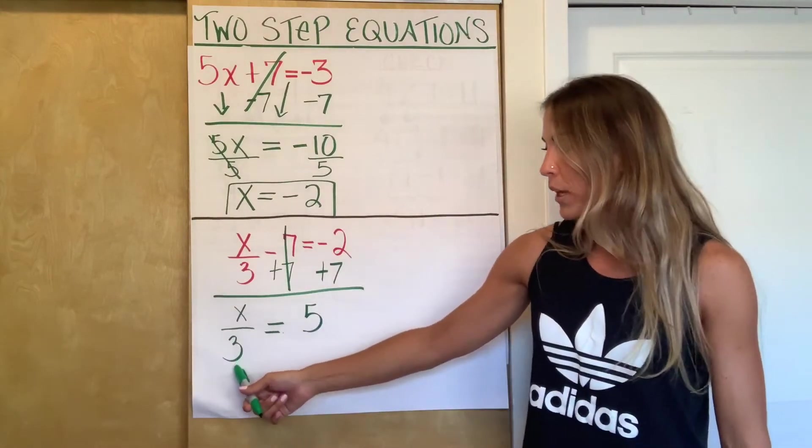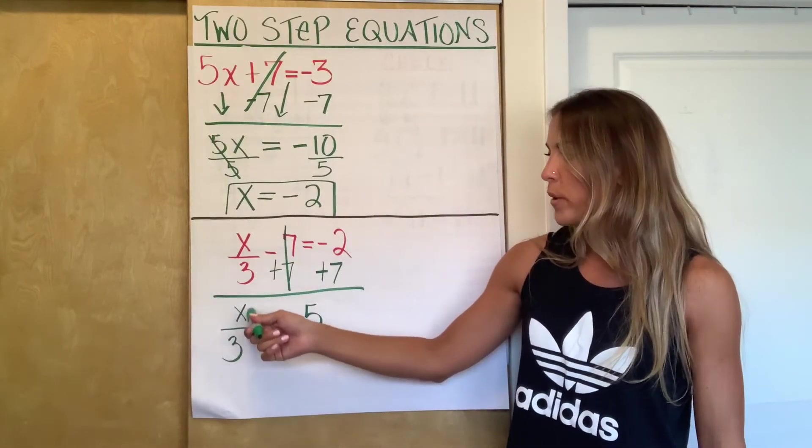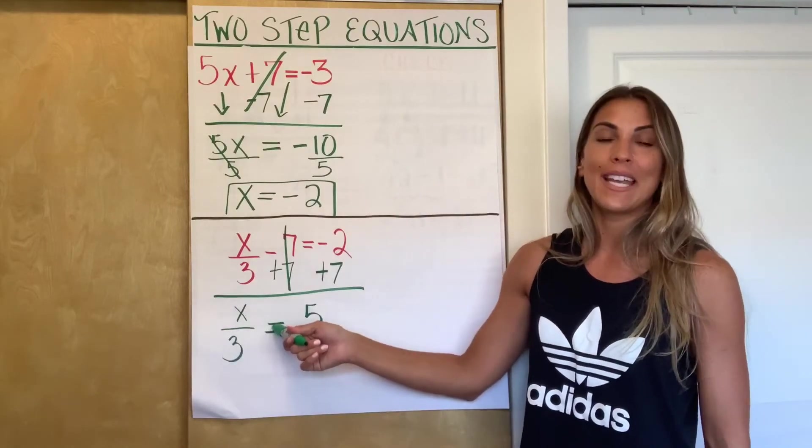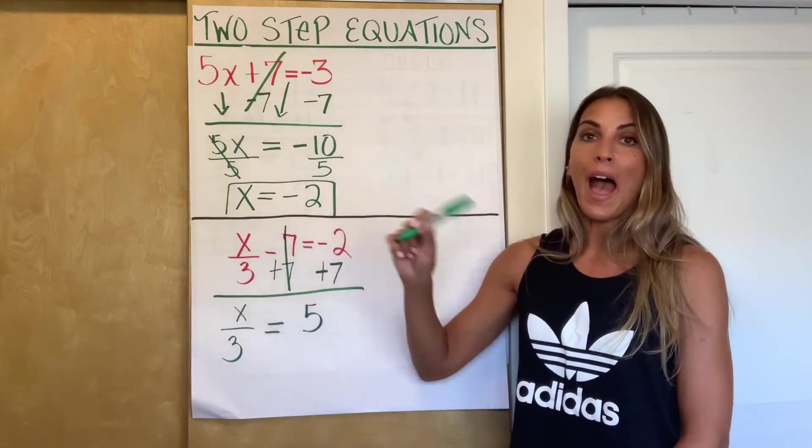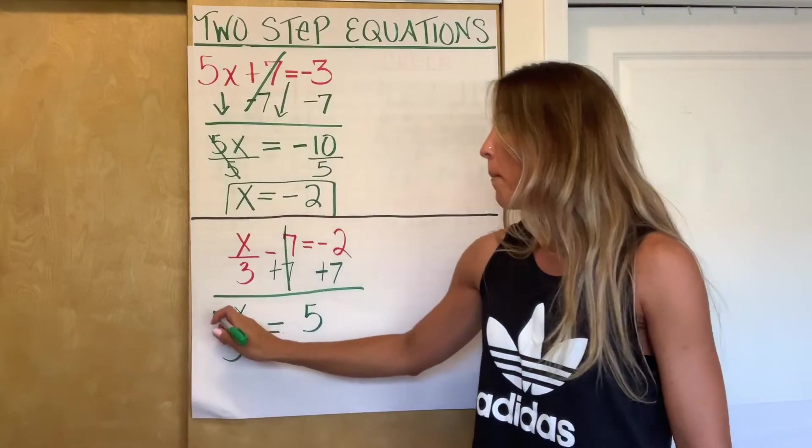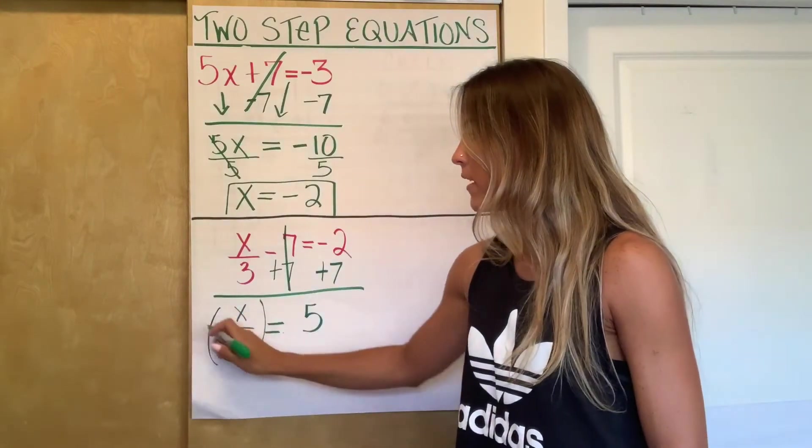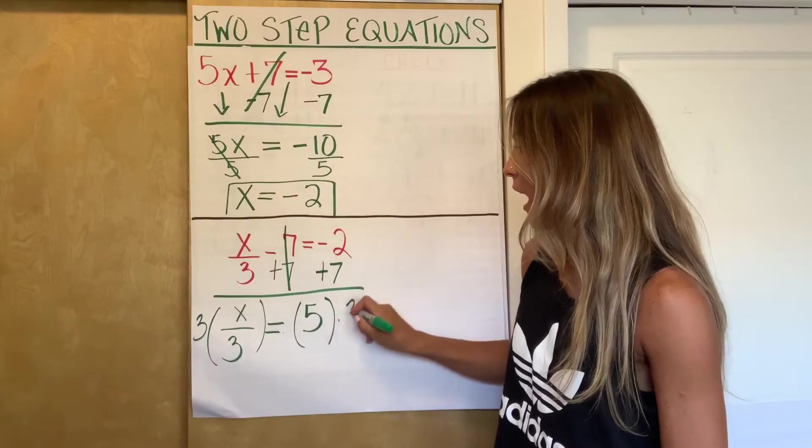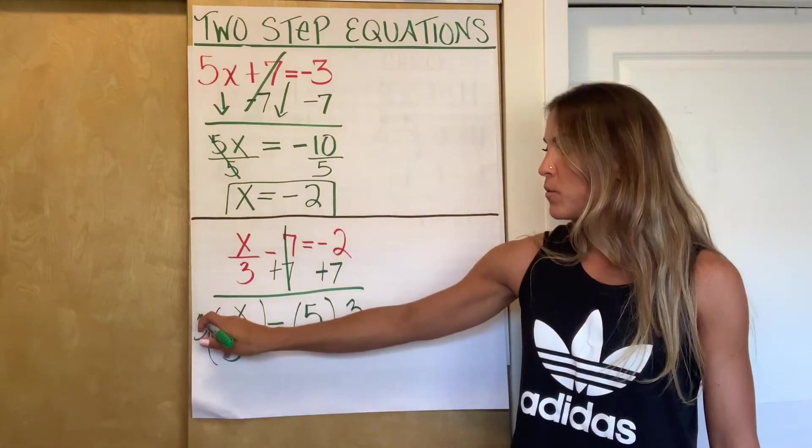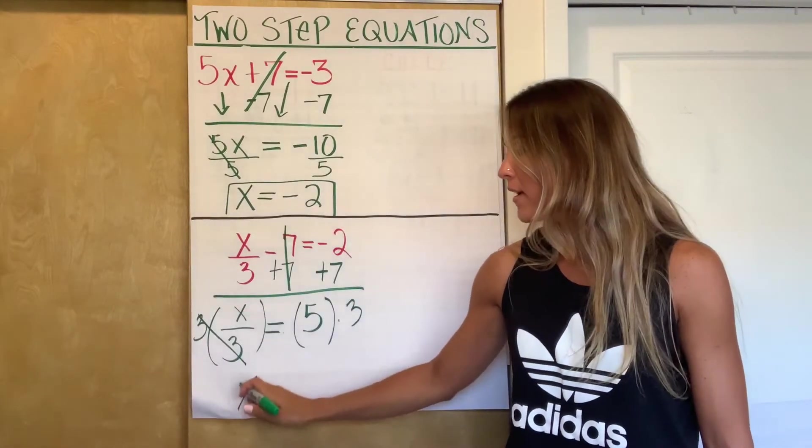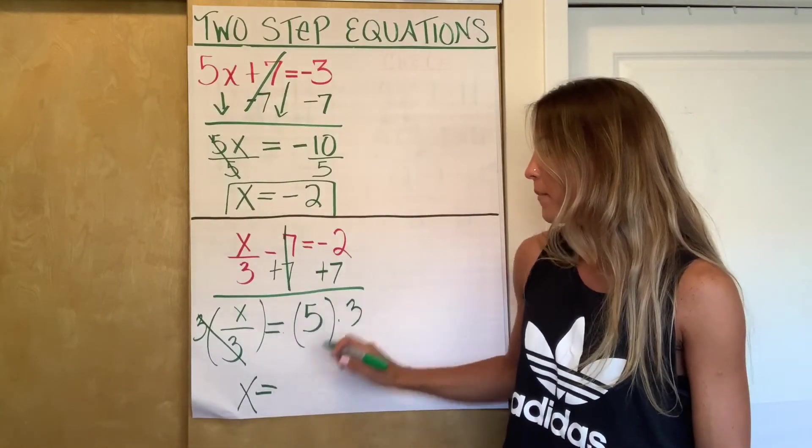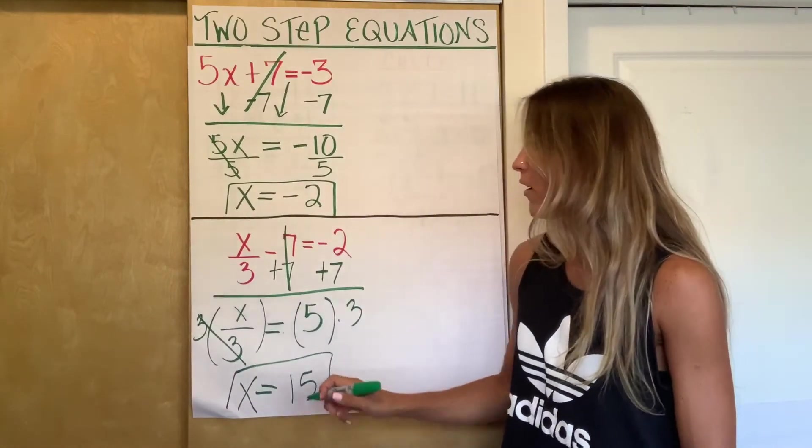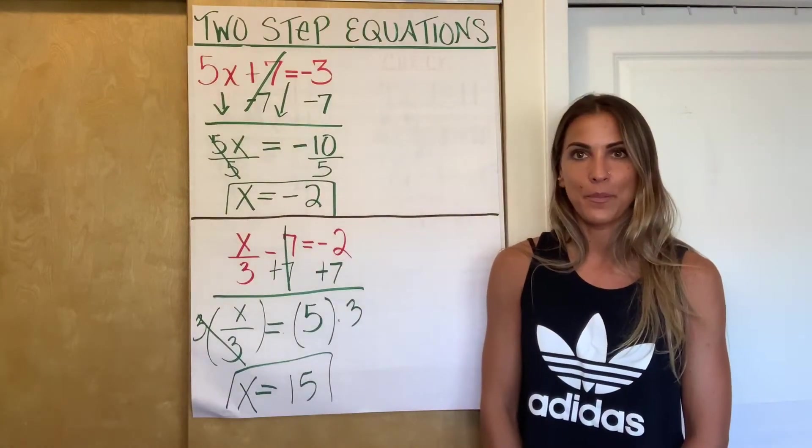Now the only thing I have to get rid of is this 3. What is this 3 doing with x? Again, that fraction bar indicates division. So the opposite of division is multiplication. So I'm going to show with parentheses. So times 3 on the left. And then times 3 on the right as well. These 3s will cancel out. And I'm left with x equals 5 times 3 is 15. So my solution here is x equals 15.